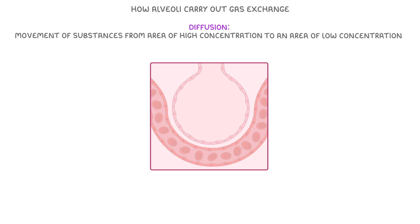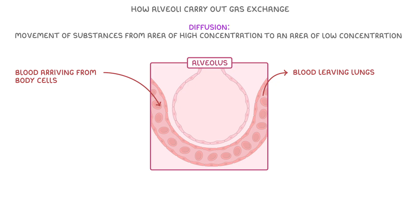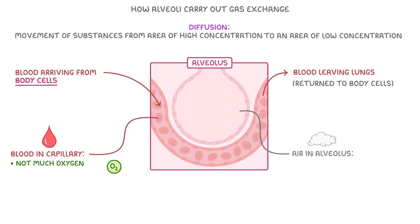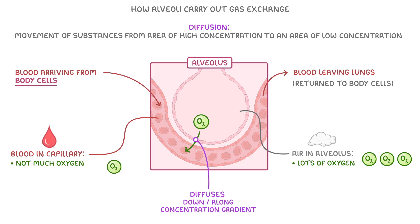For instance, let's say this is the direction of blood arriving from the body cells to the capillary next to this alveolus, and this is the direction of blood leaving the lungs that'll eventually be returned to the body cells. The blood in the capillary doesn't have much oxygen because most of it has been used up by the body cells, but the air in the alveolus has lots of oxygen that's just been inhaled. So oxygen diffuses down its concentration gradient from an area of high concentration in the alveolus to an area of low concentration in the blood.